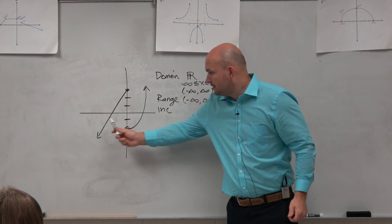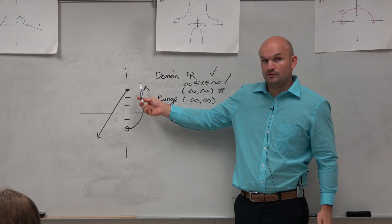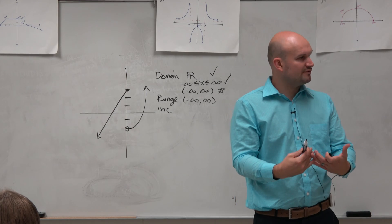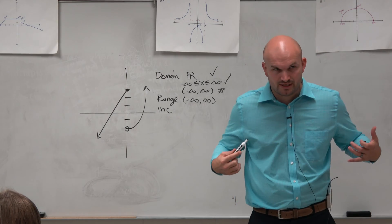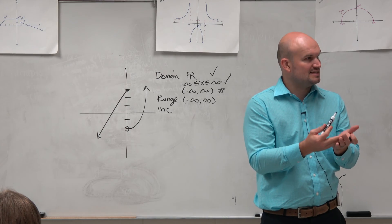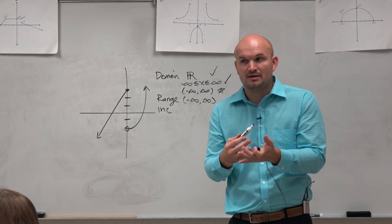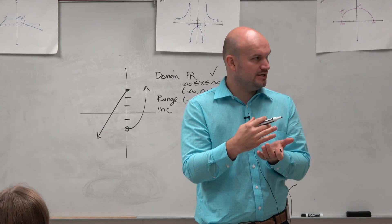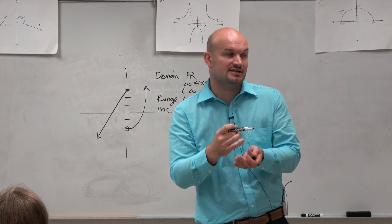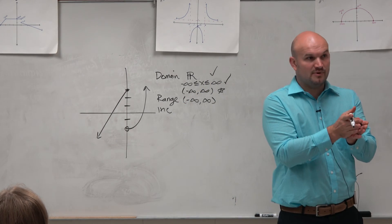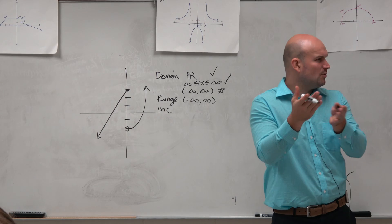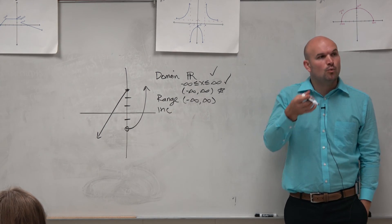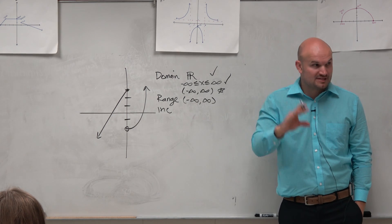Everybody would agree that from here to here the graph is going up. But again, we've got to be consistent with how we're going to frame that. We could say how much it's going up, or we could say when it's going up. You could say it's going up from 0 to 10, or you could say it's going up from this point to this point. The way that we describe increasing and decreasing intervals is when — not how high or how low it's going.